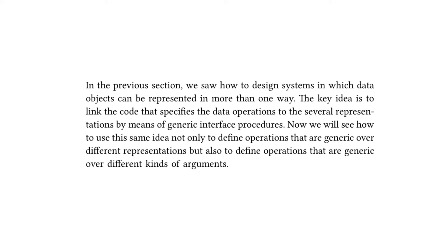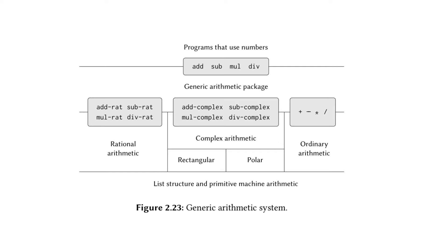Now we will see how to use this same idea not only to define operations that are generic over different representations, but also to define operations that are generic over different kinds of arguments. The textbook then shows figure 2.23, which we have seen many times before but this is the most complicated version. The key point here is that we can see our complex number covered in last week's video, where we had the rectangular representation and the polar representation.